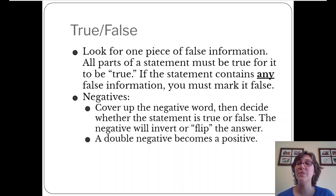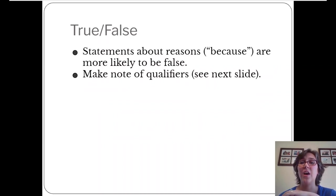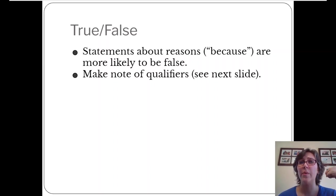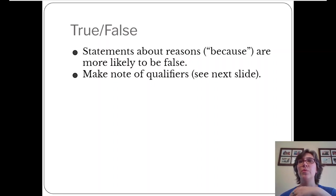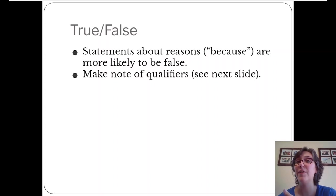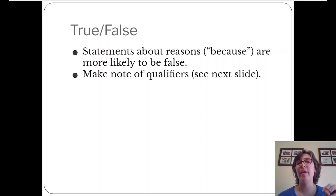Statements about reasons are usually likely to be false, especially in psychology because a lot of our research is correlational. If you have causative statements like 'because,' that question might be false just because of that word. There are also many other words called qualifiers that influence the meaning of the sentence and can make it more likely to be true or false. These words describe how often or how likely something is to occur.